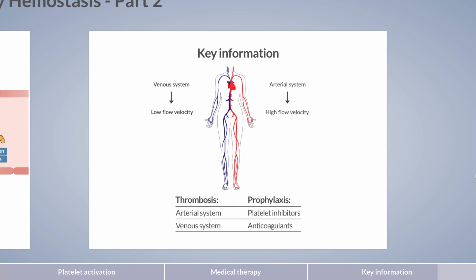Just a small note to avoid confusion. The link between arterial thrombosis prophylaxis and antiplatelet drugs, and venous thrombosis prophylaxis and anticoagulants, is correct. However, it doesn't represent the whole picture. Because platelet hemostasis is followed by coagulation, it's also reasonable to administer an anticoagulant, at least for the treatment of arterial thrombosis, such as in acute coronary syndrome. In this case, heparin is usually administered.